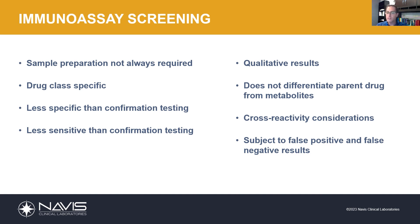An important consideration is that immunoassay screens do not differentiate between parent drugs and metabolites. This is another important concern when interpreting results. If there's a question about whether an individual might be scraping a pill and putting it into a sample versus actually consuming the drug, metabolizing it in the liver, and then excreting it — those are determinations that can be made with confirmatory testing, not with immunoassay screening, because here we're not differentiating between the two.